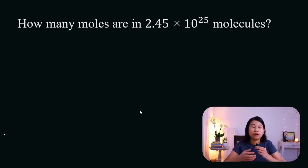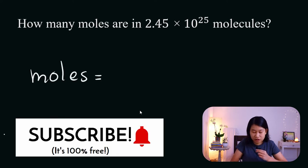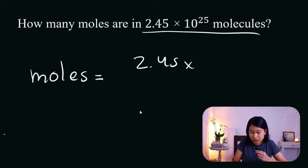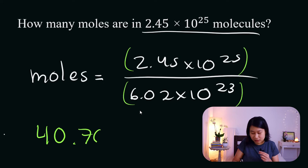How many moles are there in 2.45 times 10 to the 25 molecules? Using method number one, we have that the number of moles is going to be equal to the given number of molecules, which is going to be 2.45 times 10 to the 25. And we're going to divide that by Avogadro's number. Keeping these numbers in parentheses so that your calculator doesn't mess up, we're going to get 40.70 moles.